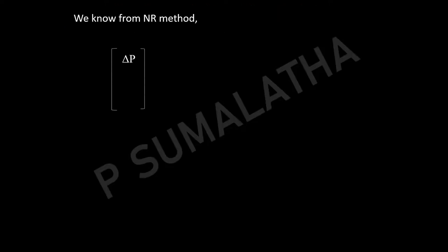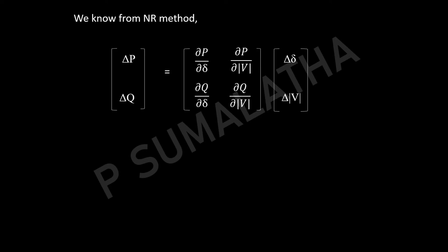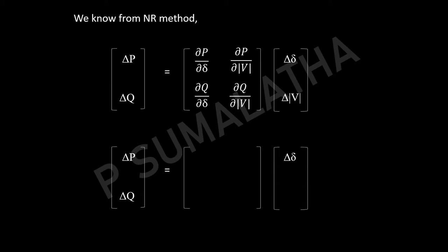From the NR method, we know the changes in real power and reactive power are represented with respect to delta-δ and delta-|V|. This is the Jacobian matrix giving the relation between real power and phase angle δ, voltage magnitude, and similarly reactive power. The same can be represented as J1, J2, J3, and J4 — these are the sub-matrices of the Jacobian matrix. Let us consider this as equation number 1.